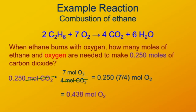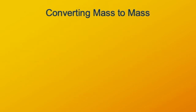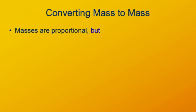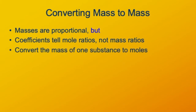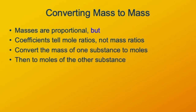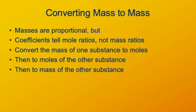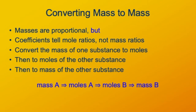That was moles to moles — very simple. But we can't measure moles directly in the laboratory; what we can measure directly is mass. For that conversion between mass and moles, we need to know the molar mass of the substance. So if we want to know how much mass of one substance it takes to react with another, we have to convert mass to moles, then moles to moles, then moles to mass.